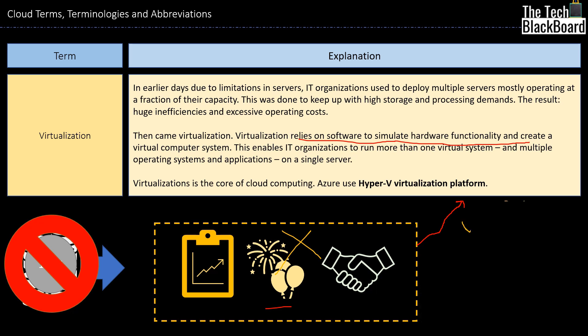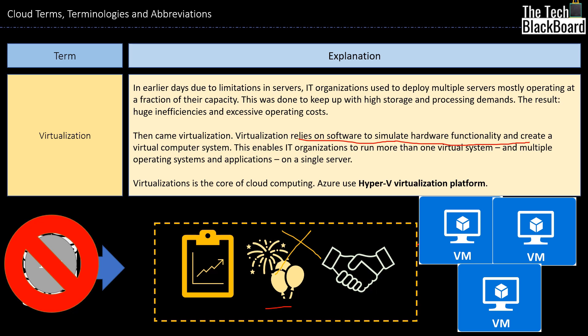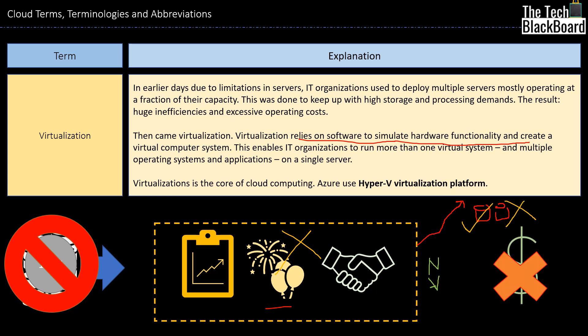Thus, as a company, in order to use your resources to their full potential, your focus should be to use your existing servers and hardware to the maximum, rather than buying new hardware for everything. And that's exactly what virtualization enables you to do. Rather than buying new hardware, you use virtualization technology to create an array of virtual machines and use your hardware to maximum output. Not only does it save huge money as capital expenditure, but you also spend very less money to maintain the servers. Virtualization is the use of software to simulate hardware, and it is the core of cloud computing.